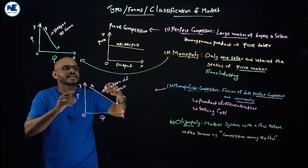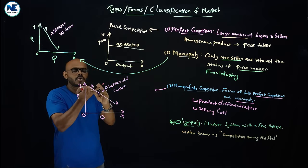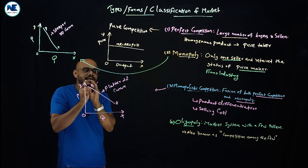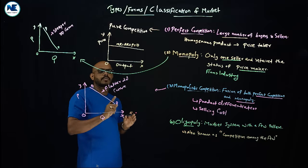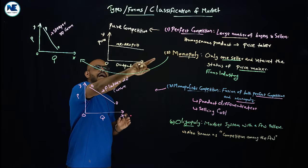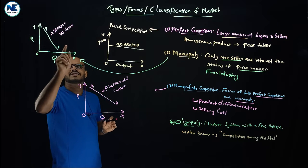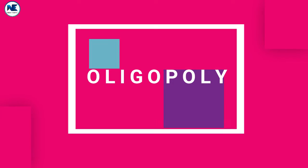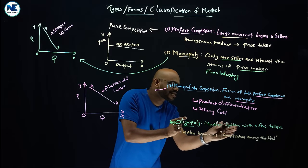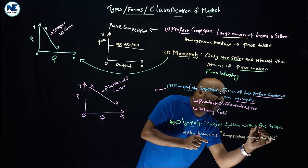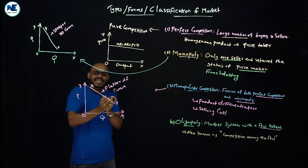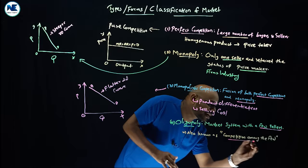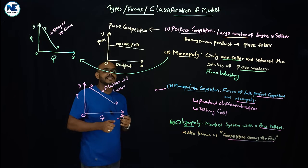Products have close substitutes under monopolistic competition. So please understand: under monopolistic competition the demand curve is more flat, while under monopoly the demand curve is more steep. Now we can see the fourth type — oligopoly. Oligopoly market is also known as competition among the few.